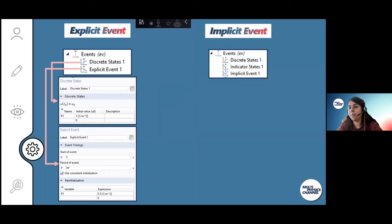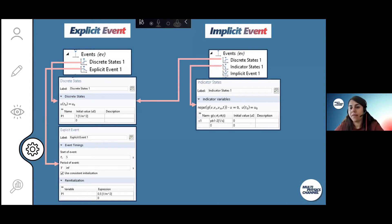The other type of events, as I said, is implicit. The first part, discrete state, is similar, but here we have indicator state.